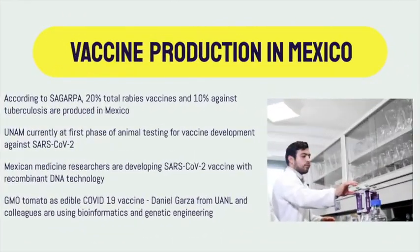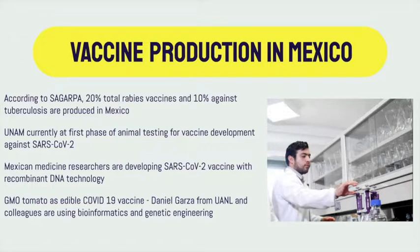According to Zagarpa, 20% of total rabies vaccines and 10% against tuberculosis are produced in Mexico. UNAM is currently at the first phase of animal testing for vaccine development against SARS-CoV-2. Mexican medicine researchers are developing a SARS-CoV-2 vaccine with recombinant DNA technology, and a GMO tomato is a possible candidate for an edible vaccine for COVID-19, being developed by Daniel Garza from UANL and colleagues using bioinformatics and genetic engineering.